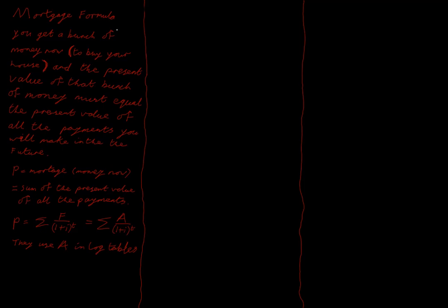Let's draw a picture. We start at the present, and then at the end of the first period — say we're doing this every year — at the end of the first year we'll make a payment, at the end of the second year we'll make a payment, and we keep doing that up to the end of the mortgage at T years. We don't make a payment now because we're dealing with present value. So our first payment is at the end of the first year, and we want to know the present value of that payment A — we divide by (1+i) to the power of one because it is discounted one year.